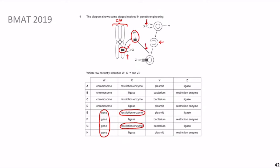We then introduce the gene into the plasmid — they merge together — and to fully seal the construct we use Z, which is DNA ligase. DNA ligase essentially completes the sugar phosphate backbone. So Y is the plasmid, Z is ligase, and the answer is E.